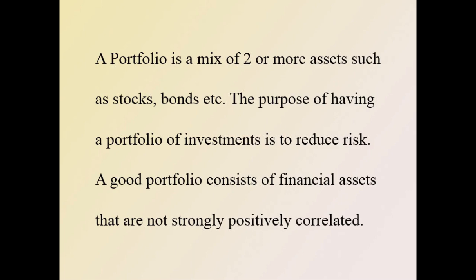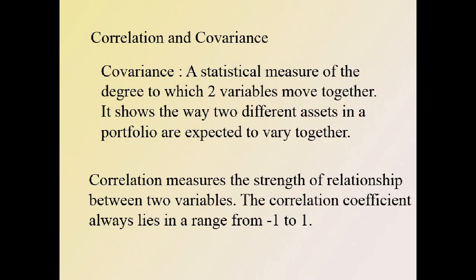Covariance and correlation are useful portfolio measures. Covariance is a statistical measure of the degree to which two variables move together — it shows how two different assets in a portfolio are expected to vary together. If the returns of two stocks move in opposite directions, they have a negative covariance; if they move in the same direction, they have a positive covariance; if they are unrelated, they have zero covariance.